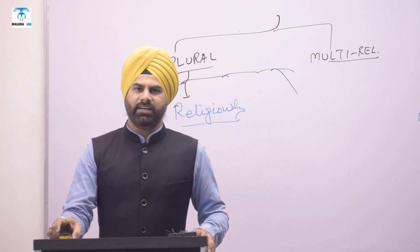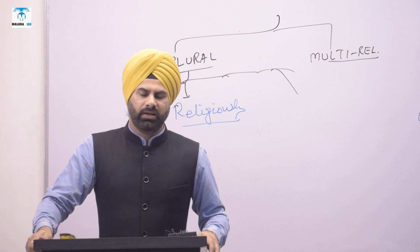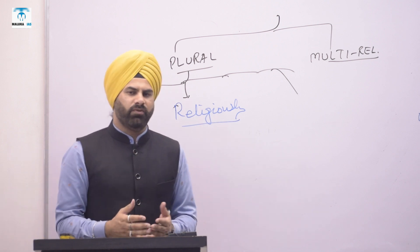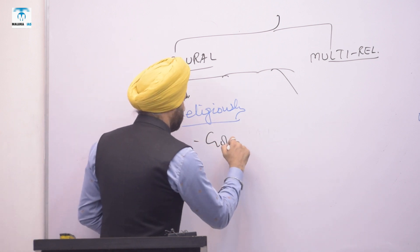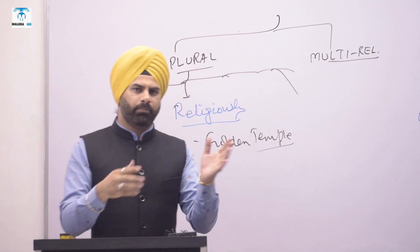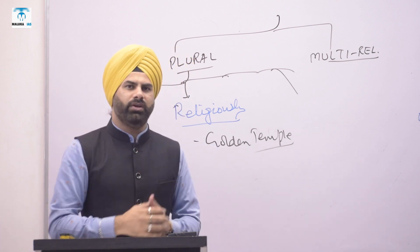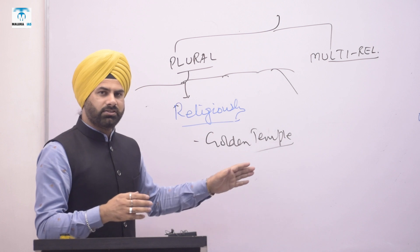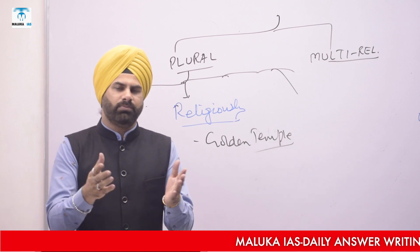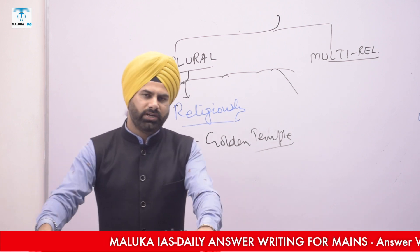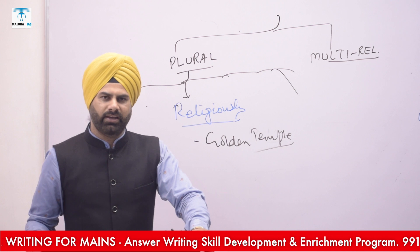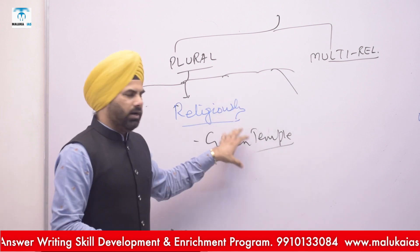Religiously also, we are a plural society. Various people visit different shrines. Sikhs visit the mandir, Hindus visit the gurudwara. I personally have seen Hindus and Muslims coming and praying at the Golden Temple. That is an example of religious pluralism. Furthermore, at the Golden Temple, the langar system — a community kitchen — is there, where no differentiation is made: Sikhs, Hindus, Muslims, Christians, and Parsis are all fed equally. Religiously, we are clearly a plural society.